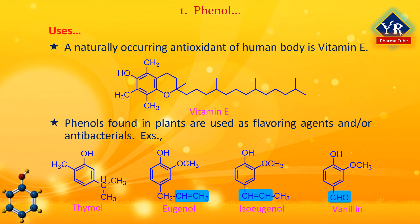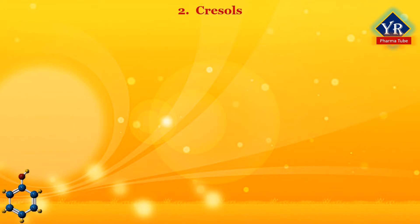Certain phenols exert profound physiological effects. For example, the irritating constituents of poison ivy and poison oak are derivatives of catechol. These skin irritants have 15-carbon alkyl side chains with varying degrees of unsaturation, that is 0 to 3 double bonds.